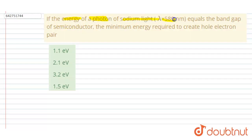Here the wavelength is given. If this equals the band gap of the semiconductor, then the minimum energy required to create the hole-electron pair—so if it is given that this much wavelength of the light is required, you can calculate the energy of that light.